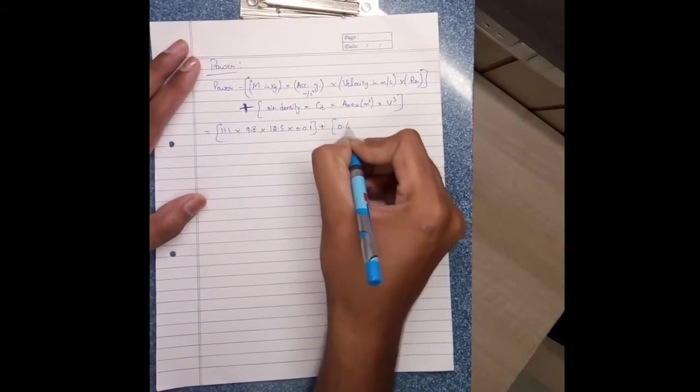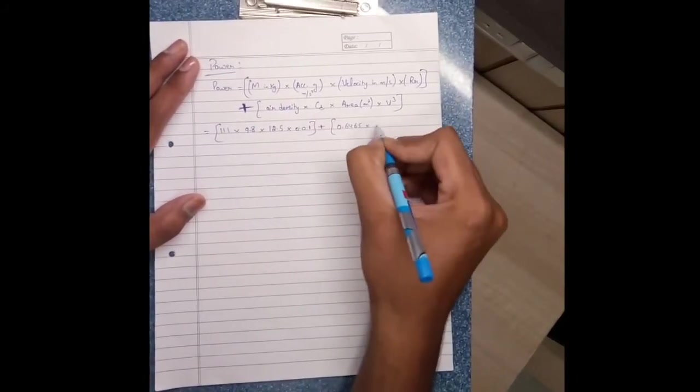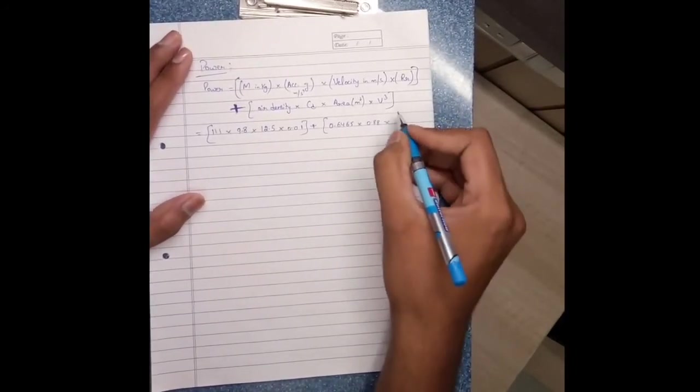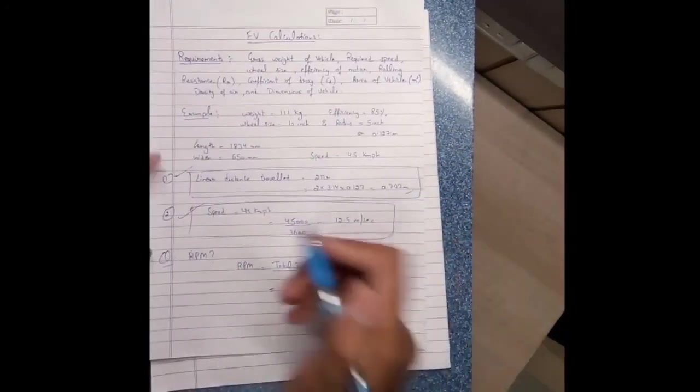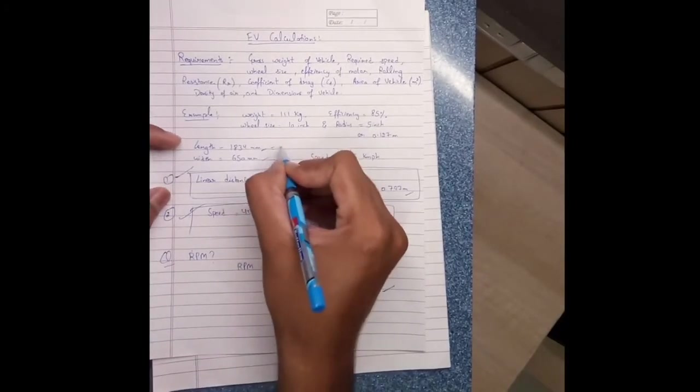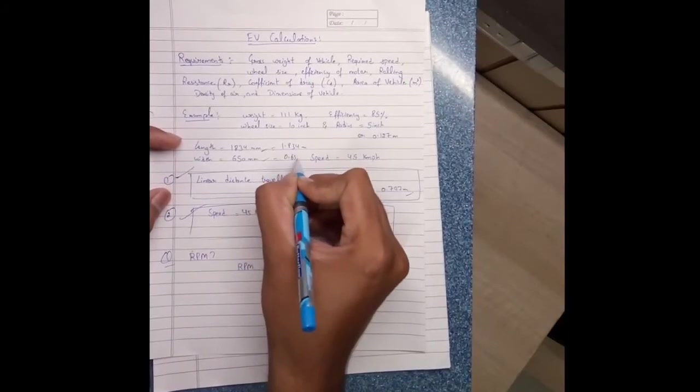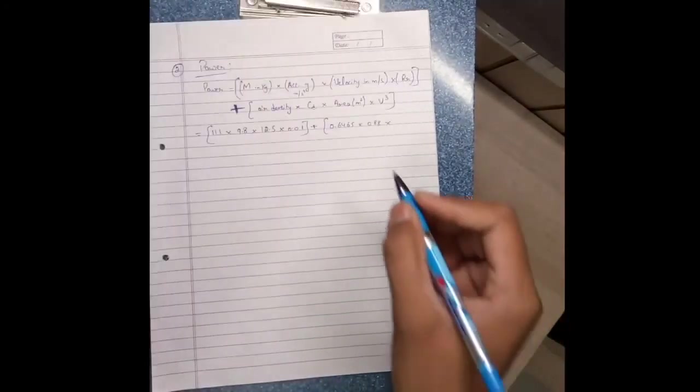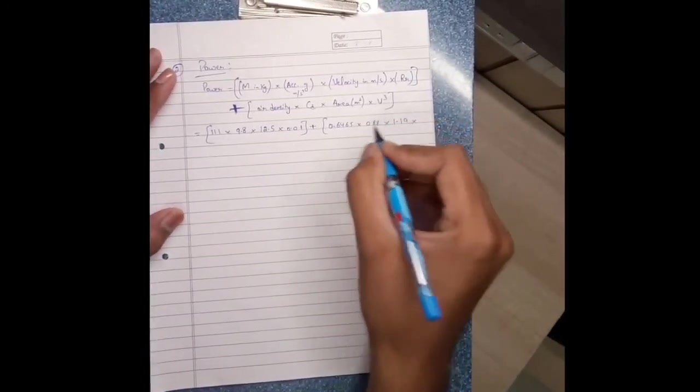Plus 0.6465, air density 0.88, coefficient of drag 2. Area comes from length times width: 1.834 meters times 0.650 meters. After multiply, this gives area that is 1.19 times velocity cubed, that is cube of 12.5.